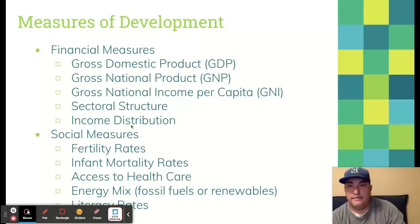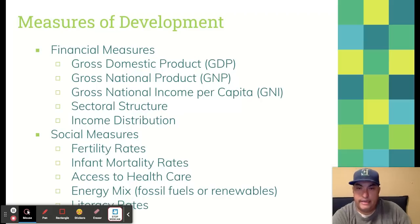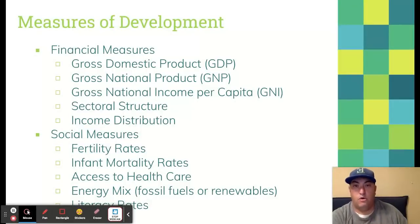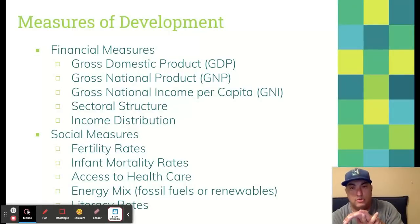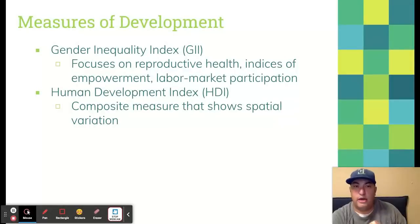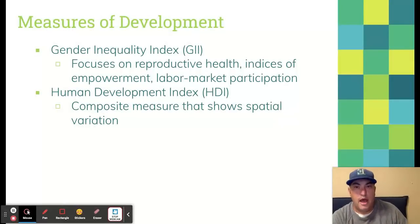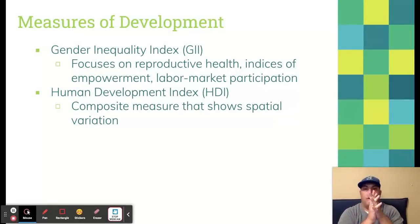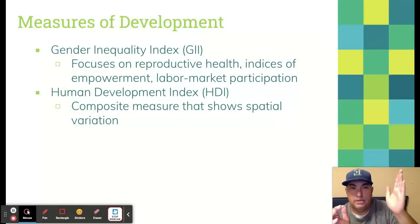Beyond financial measures, we also have some social measures. Some of these should look familiar from back in Unit 2. Fertility rates — how many people are being born per woman. Infant mortality rates — how many of those kids are able to make it to childhood. Access to healthcare, energy mix — whether a country is using fossil fuels or renewables. And then literacy rates. A couple more that geographers focus on: the gender inequality index — how equal are women to men in that particular country — and then the human development index, which is our composite measure. It takes a lot of these other measures and puts them into a single number. The closer you are to one means you're more developed; the closer to zero, the less developed you are.